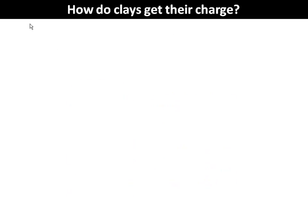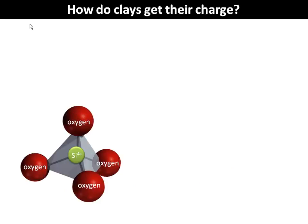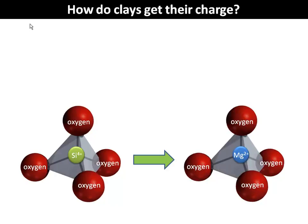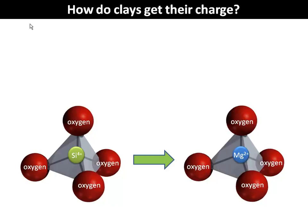That's actually not the only way that clays can get their charge. Let's go back and focus on our silicon oxygen tetrahedron — and recognize that this process also occurs in the aluminum octahedron as well. In our silicon tetrahedron, we had silicon surrounded by four oxygen atoms. Silicon had a plus-four charge and every one of those oxygen atoms had a minus-two charge. What can happen is that other elements might substitute for silicon. If magnesium is abundant, it could literally bump the silicon out and replace that silicon atom.